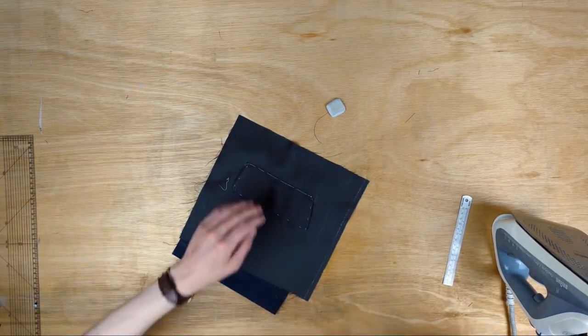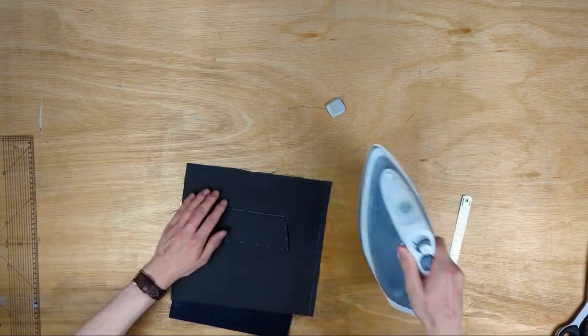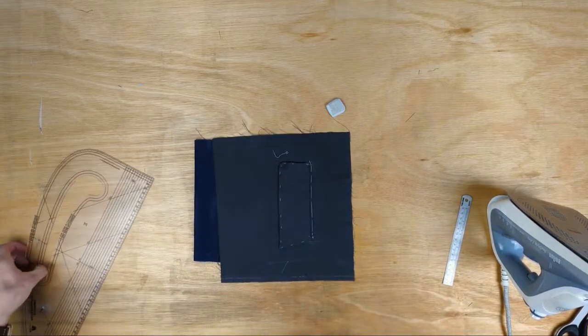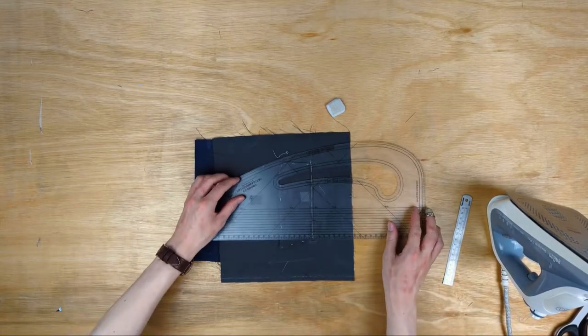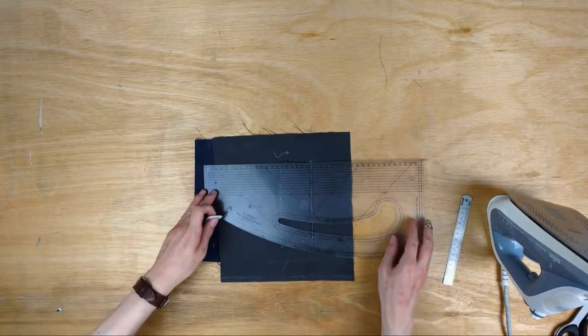You might have seen that my flap is marginally too large for the hole so I distributed the additional fabric as I basted it in and I just press the flap from the back. By the by, the flap being too big is better than being too small.